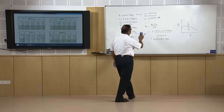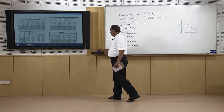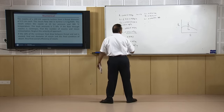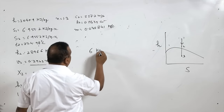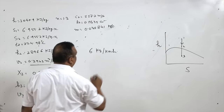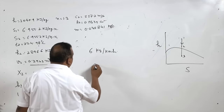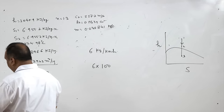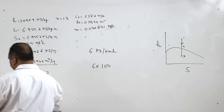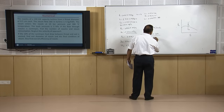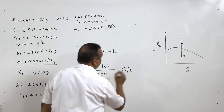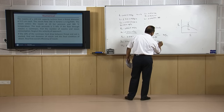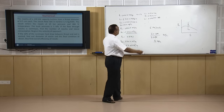The total steam consumption is 6 kg per kilowatt hour, and the plant capacity is 100 kW, so total mass flow rate = 6 × 100 / 3600 = 1/6 kg per second.